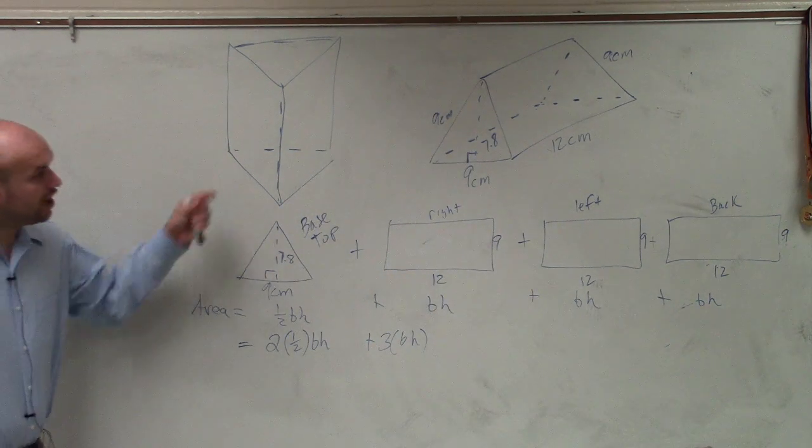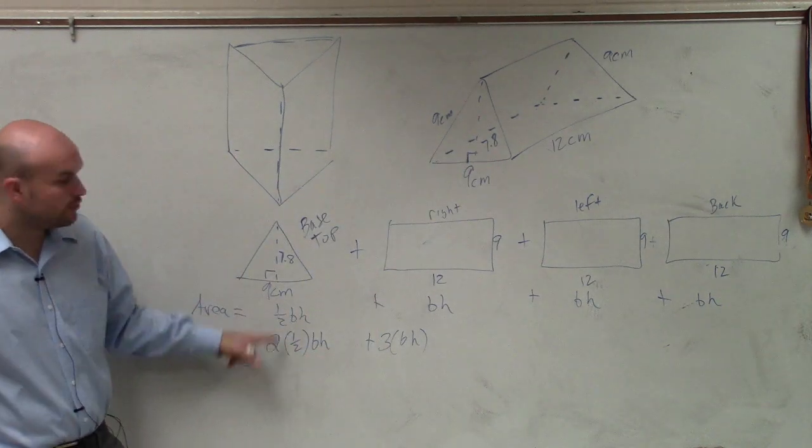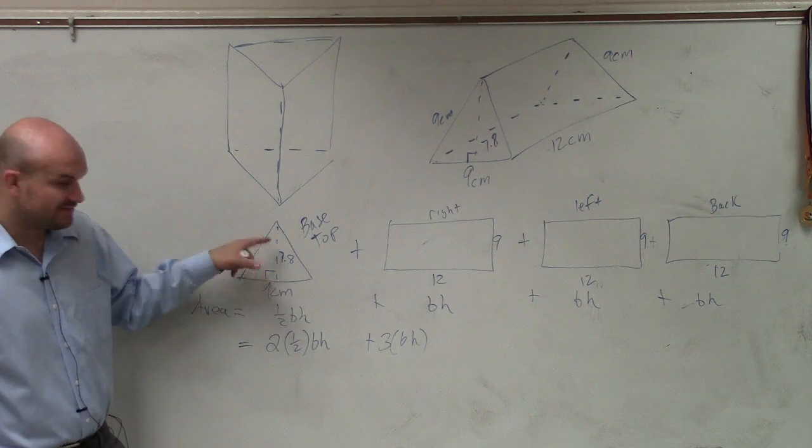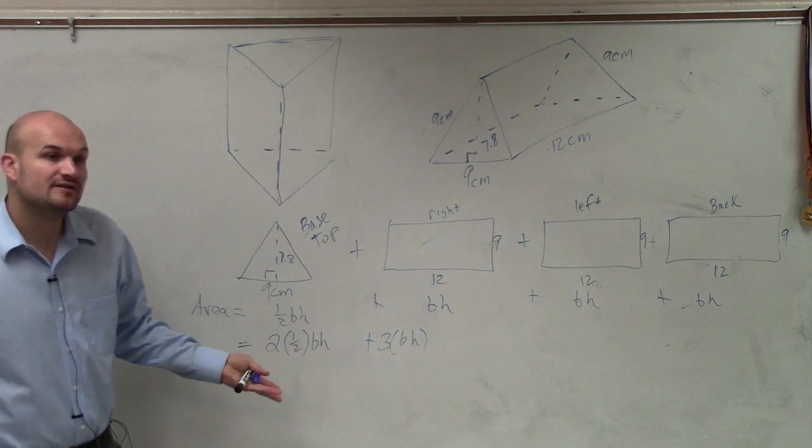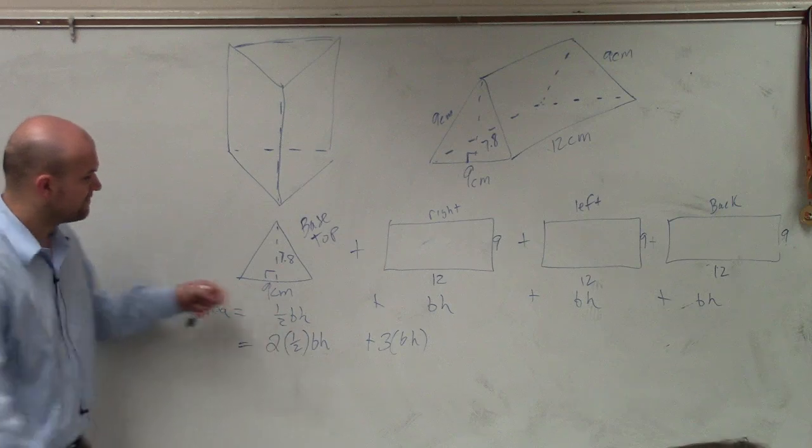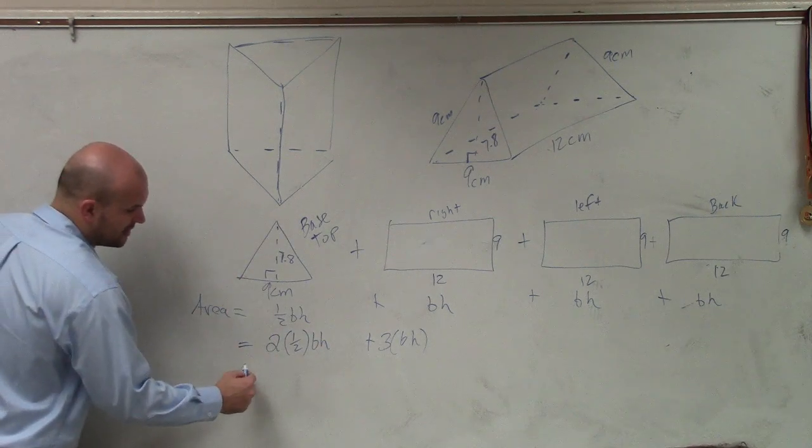So the area of this lateral surface area is going to be 2 times the area of these triangles, and 3 times the area of each one of these sides. Now we just need to figure out, well, what was the base and height for each one? So for here, the base is 9, the height is 7.8,